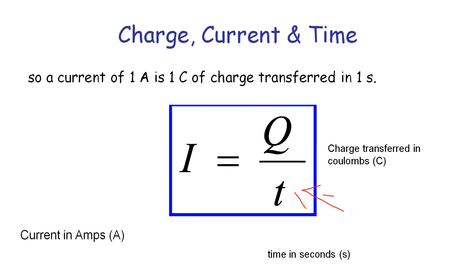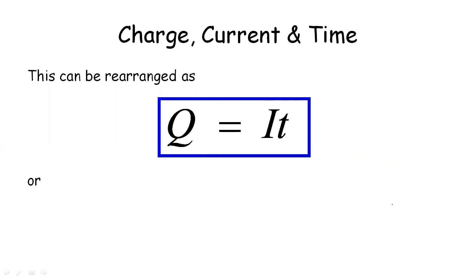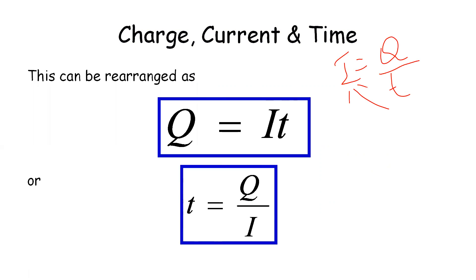One Ampere is equal to 1 Coulomb divided by 1 second. Using the formula, I = Q/t. We can transpose to get Q = I × t, or t = Q/I.